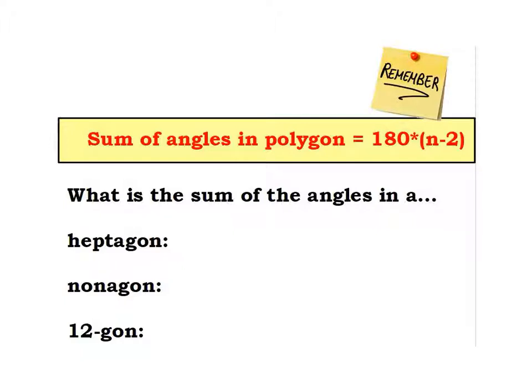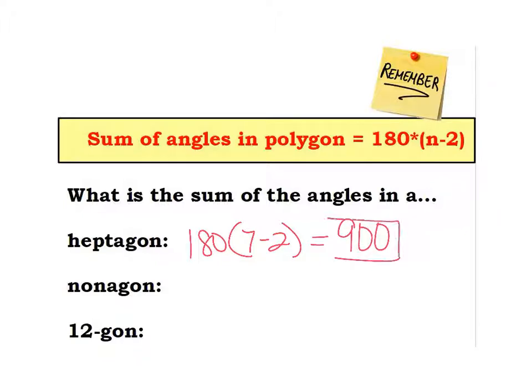Let's practice using it a couple times — you'll definitely want your calculator handy. This first one says: what is the sum of the angles in a heptagon? We have to remember how many sides a heptagon has — it is 7. So I'm going to do 180 times (7 minus 2). That's 5 times 180. The sum of all the angles in a 7-sided polygon ends up being 900.